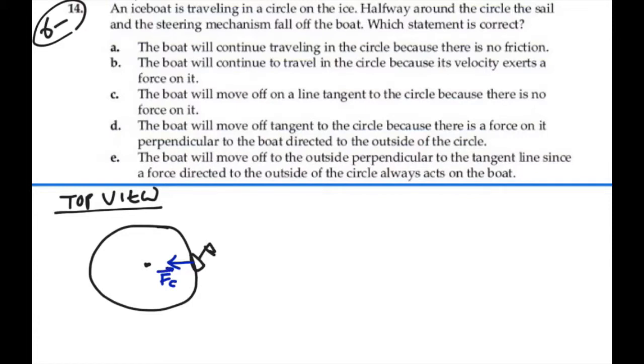And so, if that force, which is being supplied by the wind, is taken away, in other words, if the sail drops and the steering mechanism drops, there will be no net force towards the center of the circle, and this ice boat will then continue in a straight line according to Newton's first law.